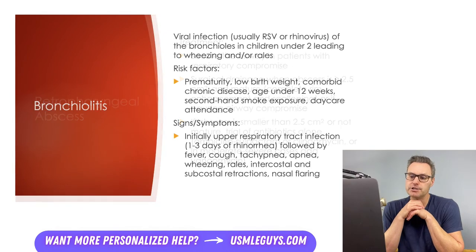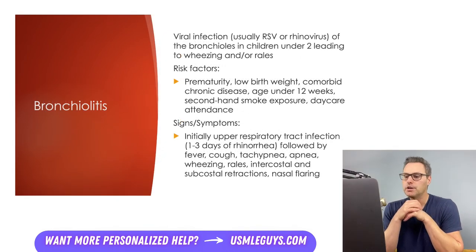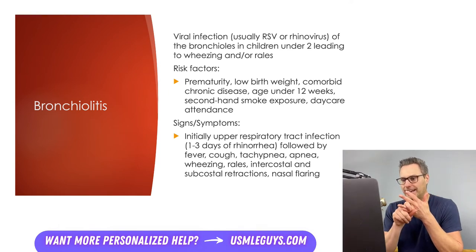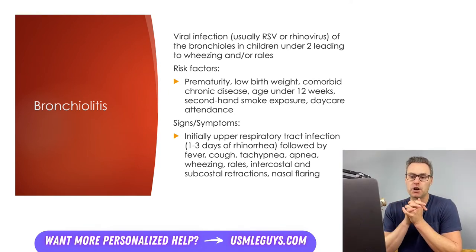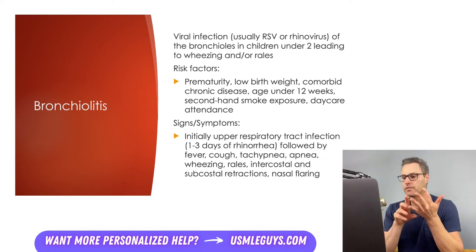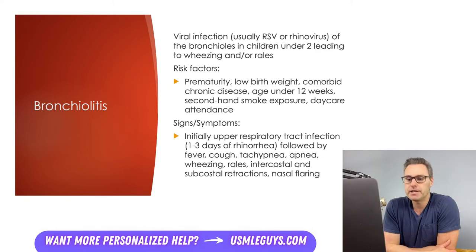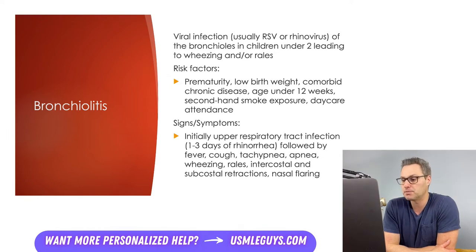Next up is bronchiolitis. This condition is caused by a viral infection, usually respiratory syncytial virus or rhinovirus, resulting in infection and inflammation of the bronchioles in children under two years of age, leading to wheezing and/or rales. The majority of infections occur during the fall and winter months. This viral infection causes edema, secretions, and sloughed epithelial cells that obstruct the bronchioles, leading to lower respiratory tract symptoms. Patients often initially have signs of an upper respiratory infection — rhinorrhea and nasal congestion — before lower respiratory symptoms occur.